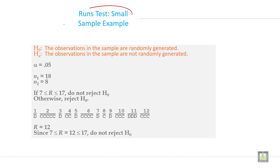This is the output of the runs test. Null hypothesis: The observations in the sample are randomly generated. Alternate hypothesis: The observations are not randomly generated. Significance level alpha equals 0.05. n1 equals 18 and n2 equals 8. If 7 less than or equal to R less than or equal to 17, do not reject the null hypothesis. Otherwise, reject the null hypothesis.